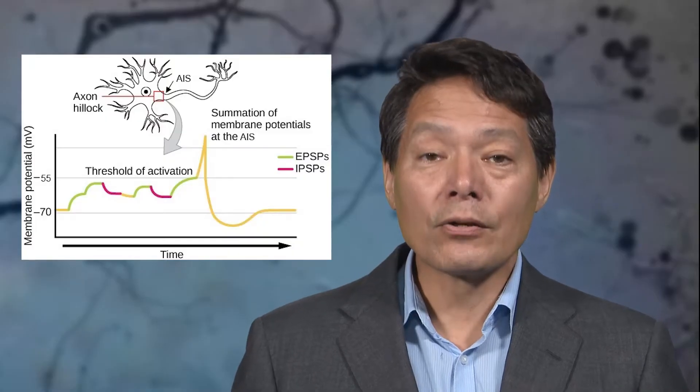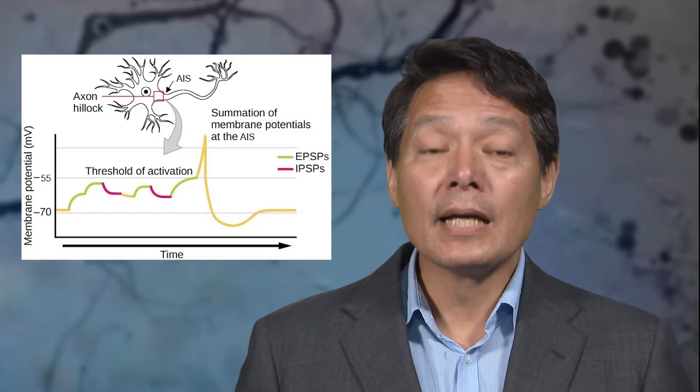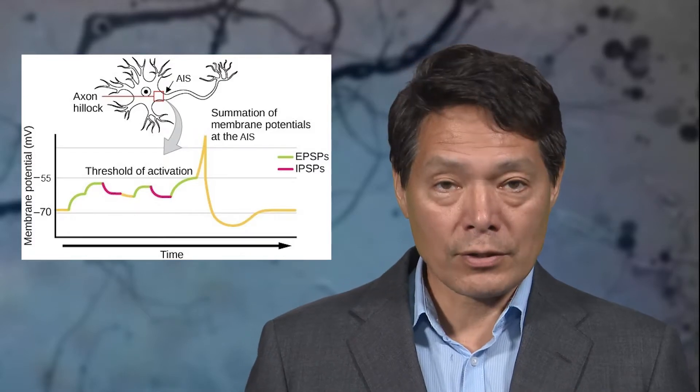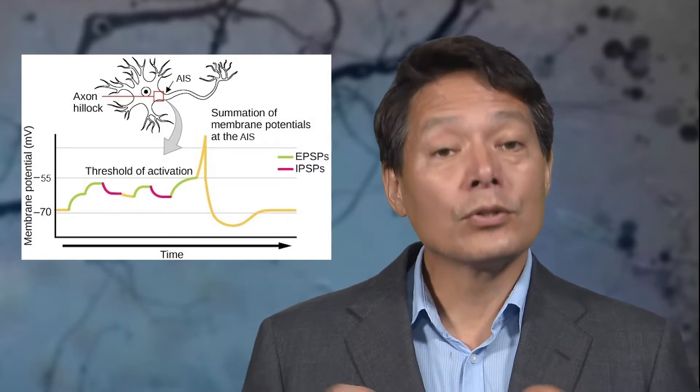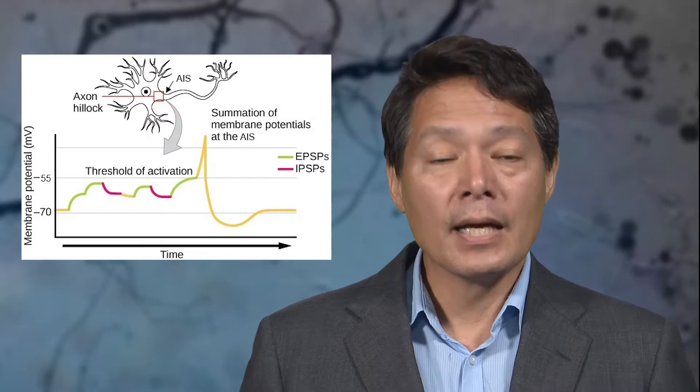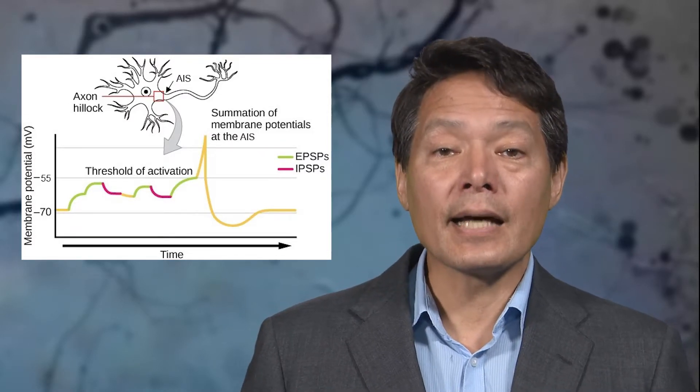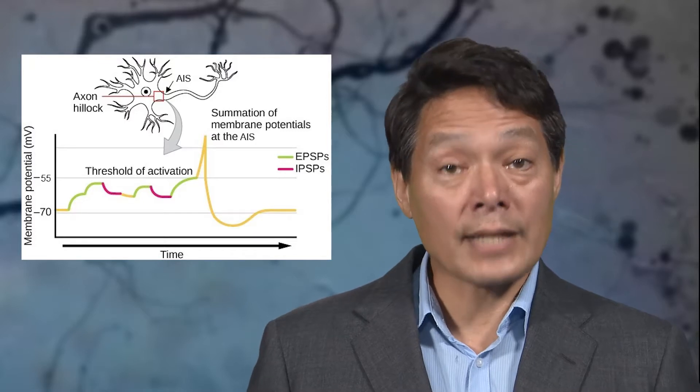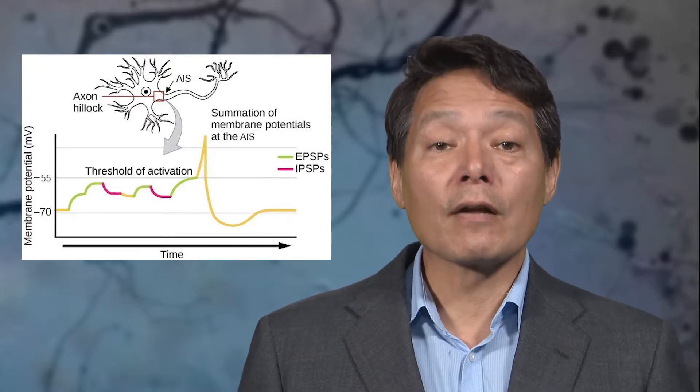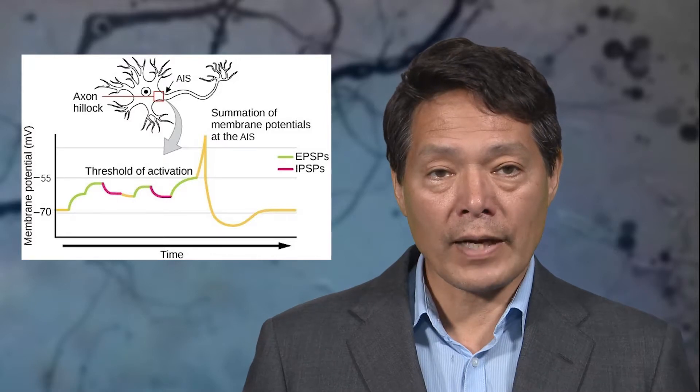However, a neuron can also be hyperpolarized by inhibiting inputs, typically triggered by the binding of a neurotransmitter molecule known as GABA to GABAergic receptors. If these inhibitory ionotropic receptors open, then the net ionic charge inside the neuron goes down or is hyperpolarized, bringing the neuron further away from the threshold for firing.